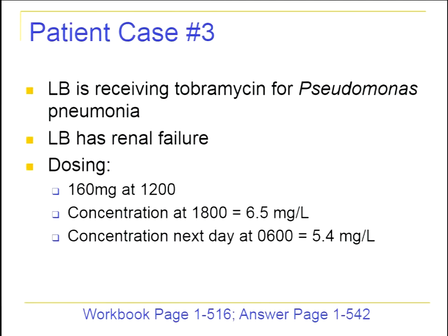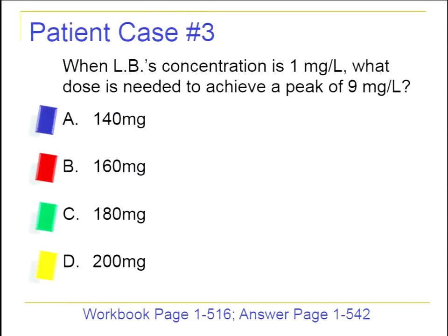Patient case LB: receiving tobramycin for pseudomonas pneumonia with renal failure. A 160 mg dose is given at noon; six hours later the concentration is 6.5, and 12 hours after that it's 5.4. The question is: when LB's concentration is 1, what dose is needed to achieve a peak of 9? Options are 140, 160, 180, or 200 mg.